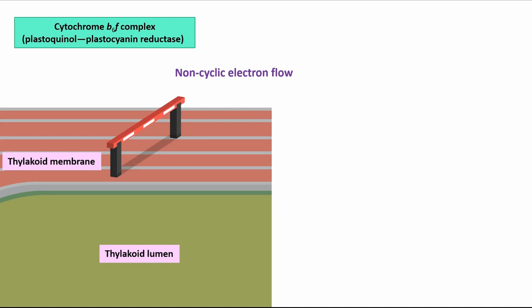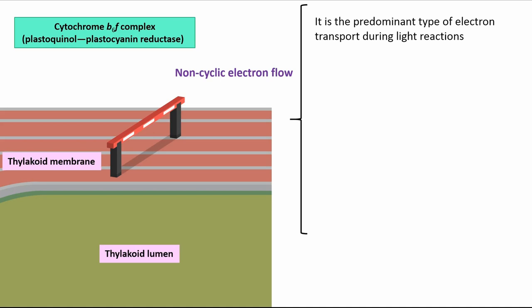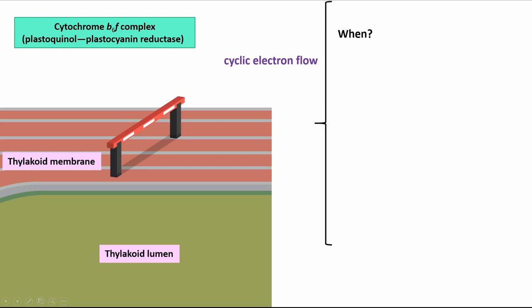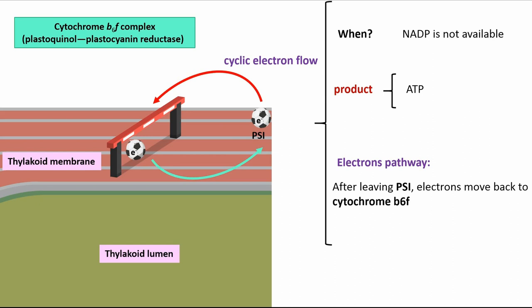Non-cyclic electron flow is the predominant type of electron transport in light reactions. Products of non-cyclic electron flow are ATP, NADPH, and oxygen. Electrons pass in non-cyclic electron flow from water to PS2 and PS1 to NADPH. Cyclic electron flow occurs when NADPH is not available. The product of cyclic electron flow is ATP. After leaving PS1, electrons in cyclic electron flow move back to Cytochrome B6F and then to plastocyanin, or PC.